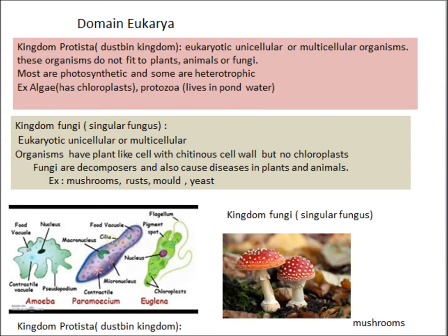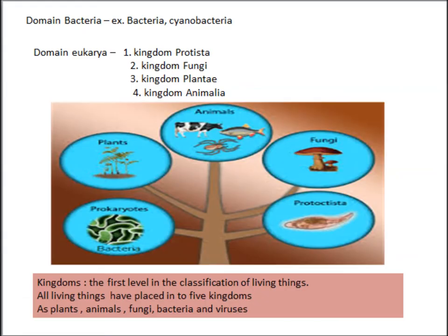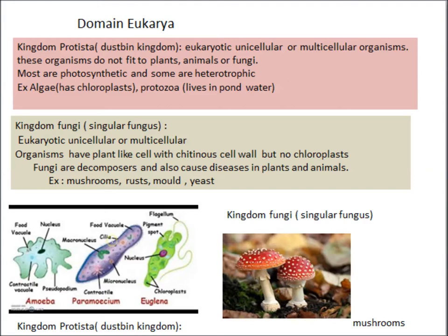Now see kingdom Fungi — the singular word is fungus. Fungi are eukaryotic, and can be unicellular or multicellular organisms. Fungi have plant-like cells but no chloroplast. These organisms also form symbiotic associations with other organisms.